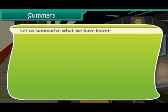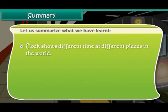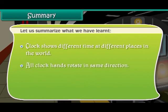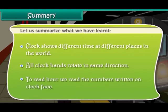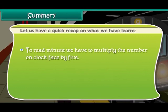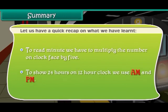Let us summarize what we have learned. Clocks show different times at different places in the world. All clock hands rotate in the same direction. To read the hour, we read the numbers written on the clock face. To read the minute, we multiply the number on the clock face by 5. To show 24 hours on a 12-hour clock, we use AM and PM.